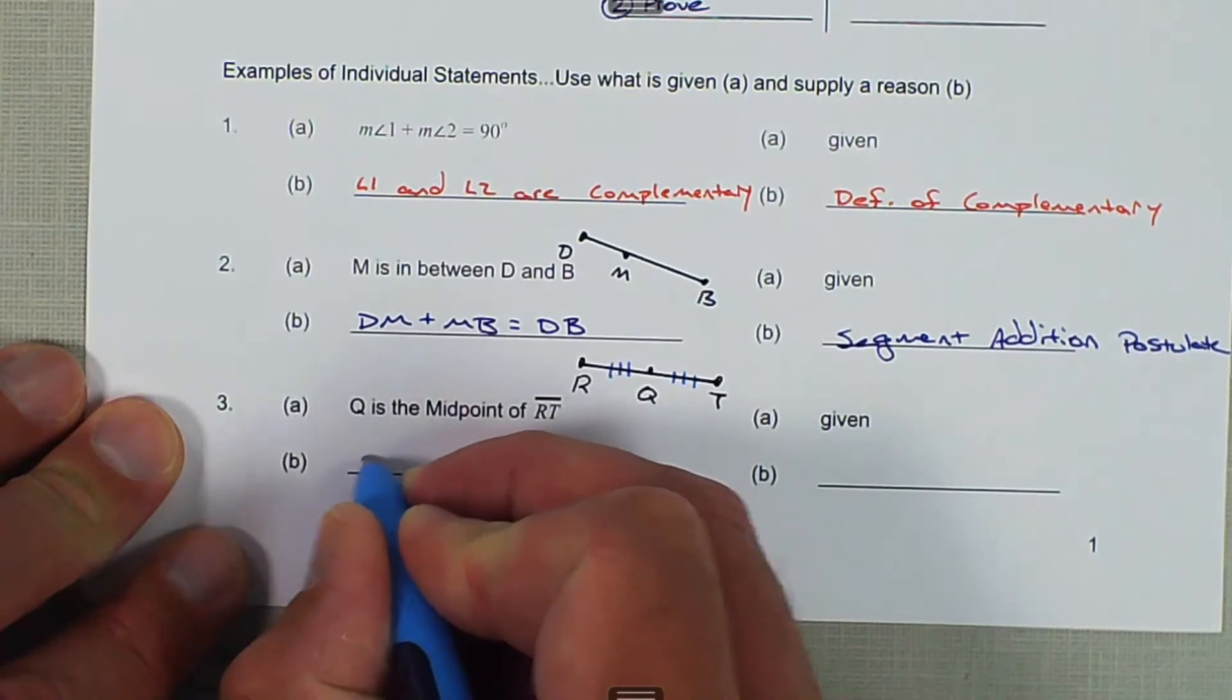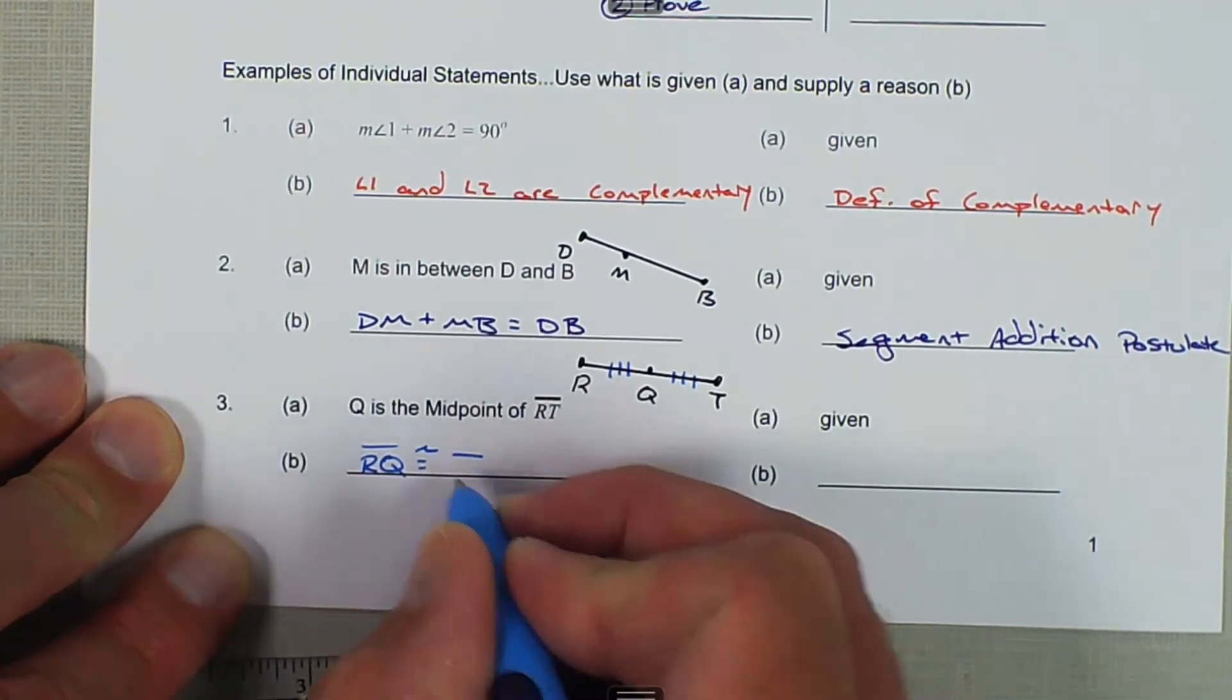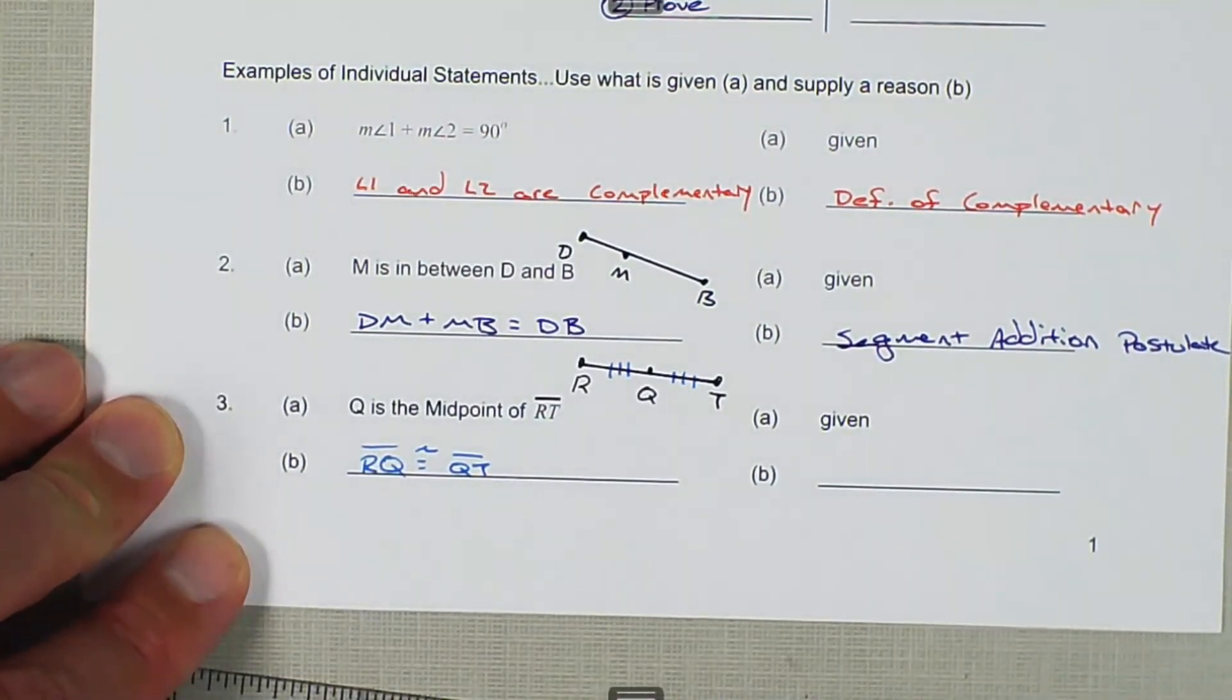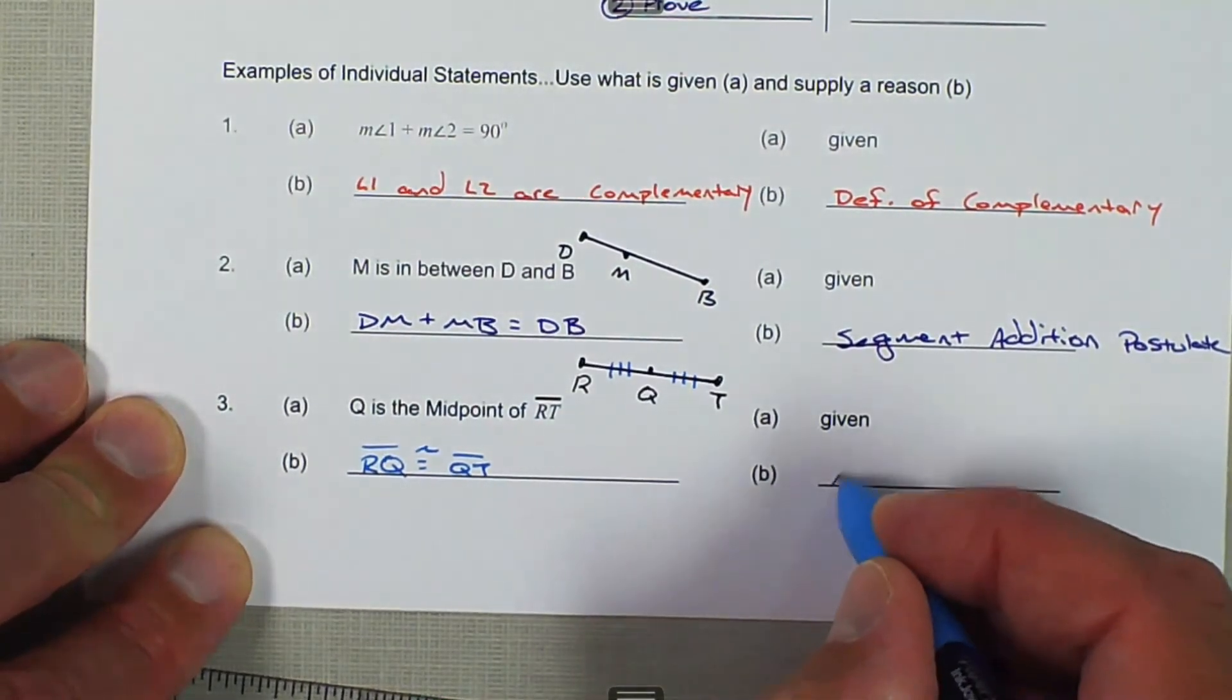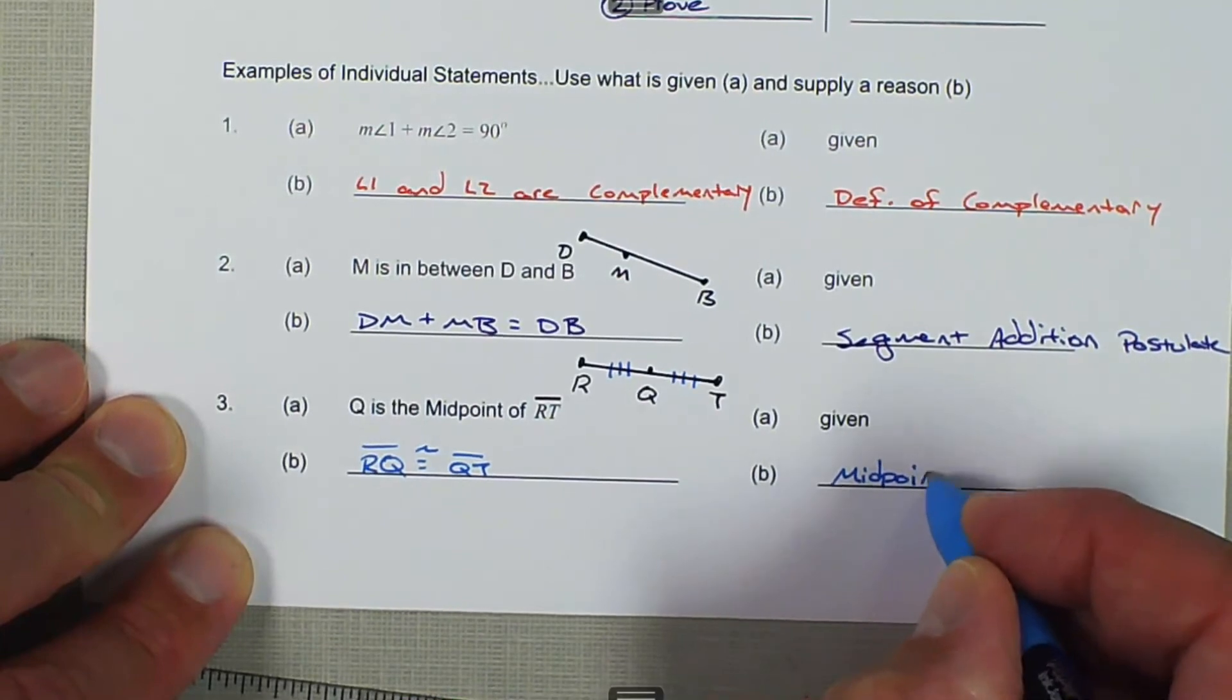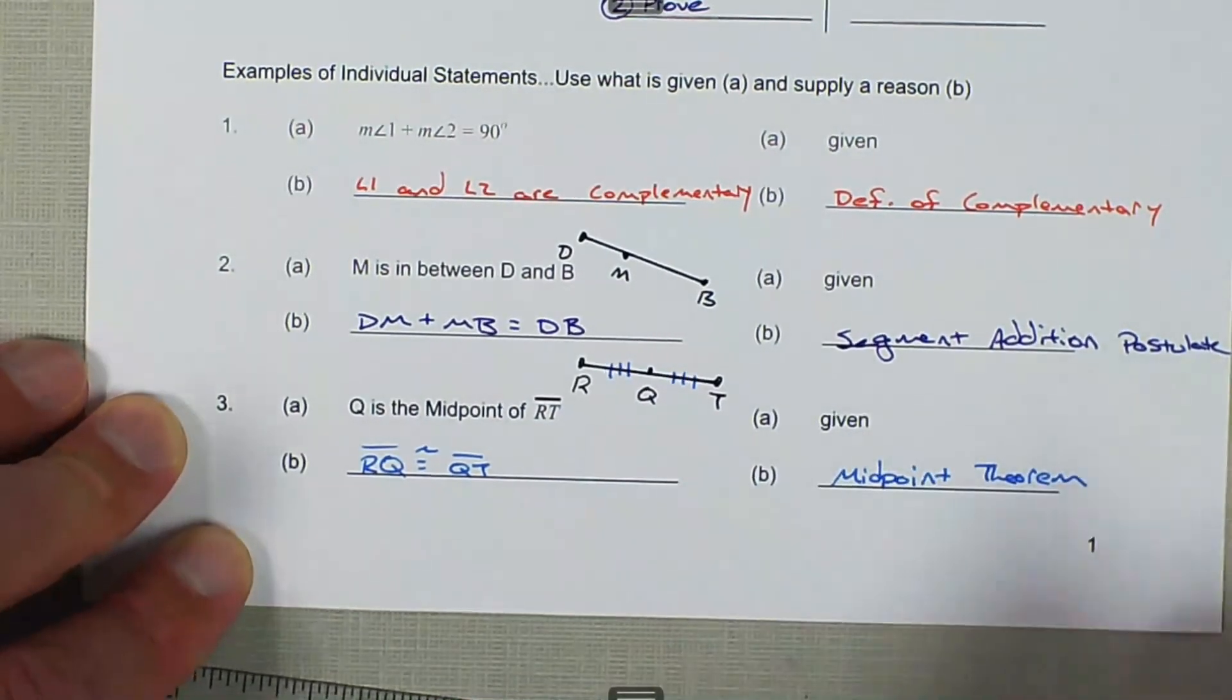So then we can say line segment RQ is congruent to line segment QT, and the reason that we can say that is because of the midpoint theorem.